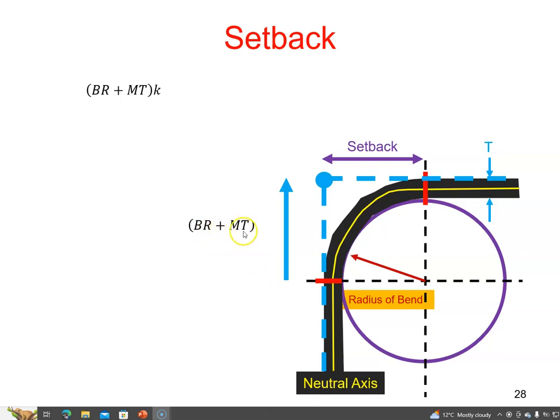But we already said it's the bend radius plus the material thickness multiplied by K. So K is obviously equal to one in this case. How could that be?